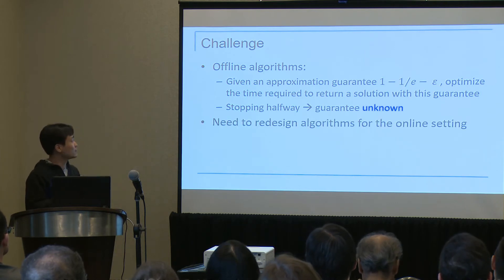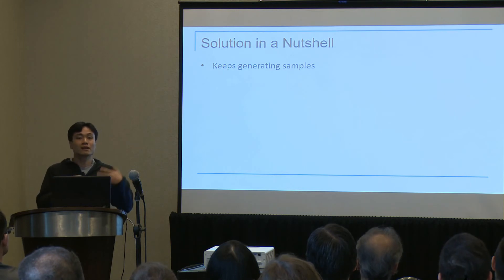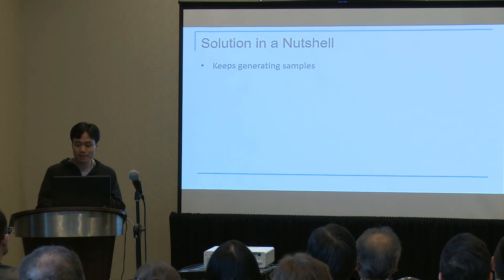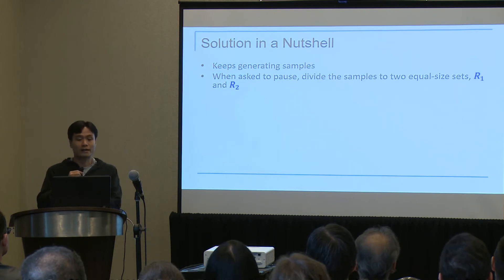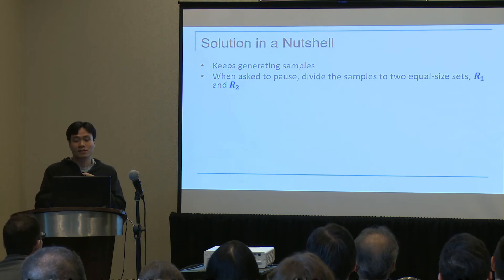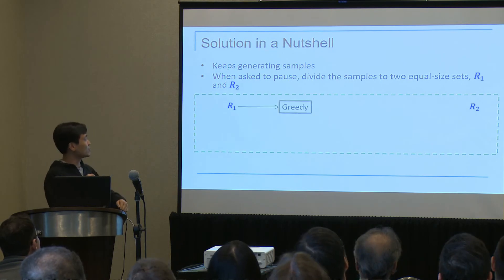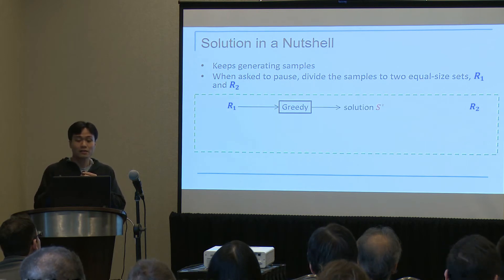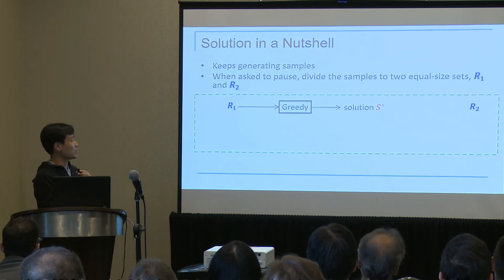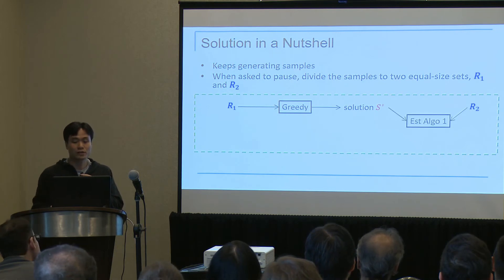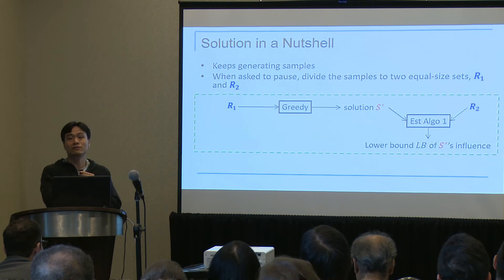So we redesigned the algorithm for the online setting. The basic idea is as follows: our algorithm keeps generating samples using the same sampling technique as existing offline algorithms. Whenever the user checks progress, the algorithm looks at the sample set it has generated, divides it into two equal-size subsets R1 and R2. It uses R1 and runs the greedy maximum coverage algorithm on it to produce a solution, which is reported to the user. At the same time, the algorithm generates an approximation guarantee by feeding the solution and R2 into an estimation algorithm to get a lower bound of the solution's expected influence.